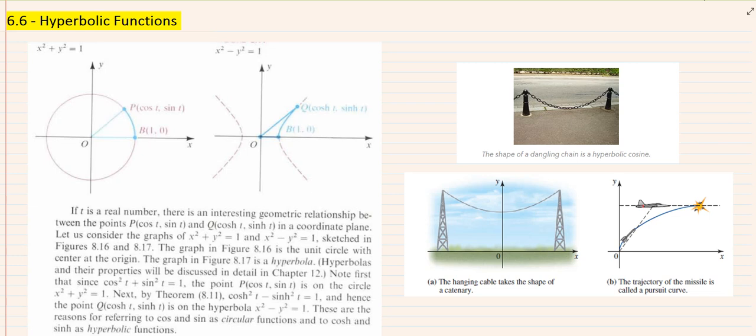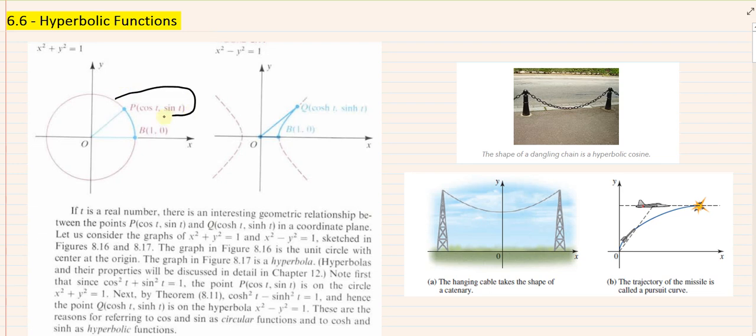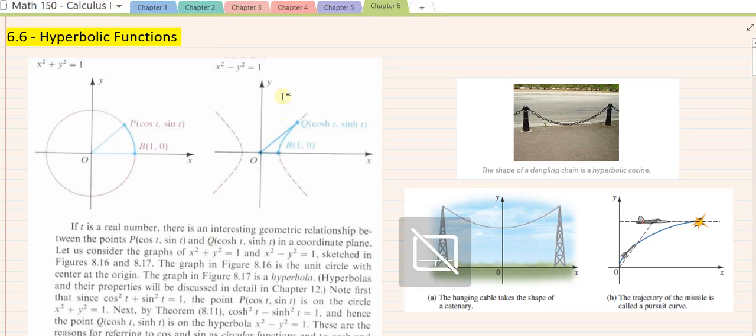In section 6.6, we're going to talk about hyperbolic functions. The reason sine, cosine, tangent and so on were called circular functions is because they represent the coordinate of a point on a circle. Likewise, if we indicate the coordinates of points on the right branch of a hyperbola given by x squared minus y squared equal 1, we get the right branch of a hyperbola, and the coordinates of those points are defined as hyperbolic cosine and hyperbolic sine. The coordinates of the point on the circle are cosine t and sine t, while on the hyperbola they are cosh t and sinh t.